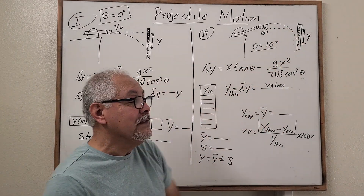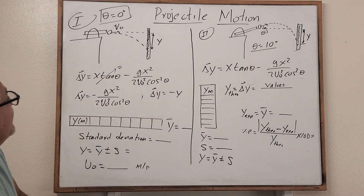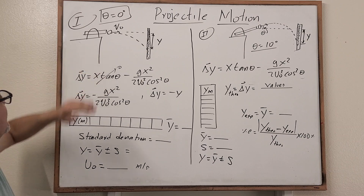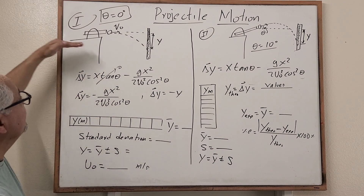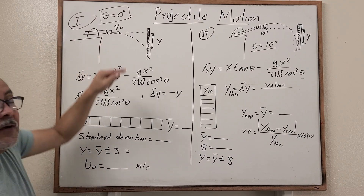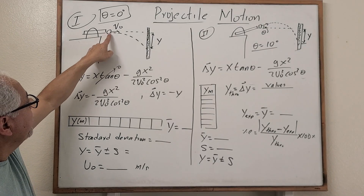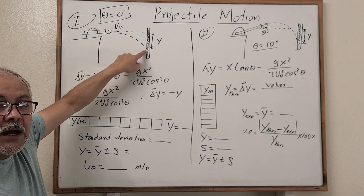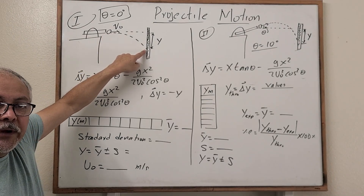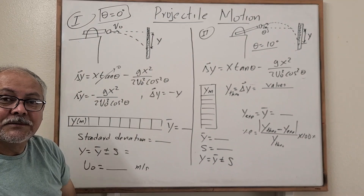We are using the answer from part one — the initial velocity — in part two to calculate the distance. First, we have the spring launched horizontally. So, because of gravity, the projectile is going to hit one point below the horizontal.